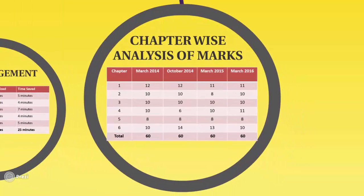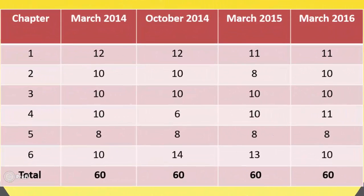Next, we see the chapter-wise analysis of marks. Chapter 1: in March 2014 it had 12 marks, in October 2014 it had 12 marks, and in March 2015 and 2016 it had 11 marks each. Chapter 2: in March 2014 it had 10 marks, in October 2014 it had 10 marks, in March 2015 it had 8 marks, and in March 2016 it had 10 marks.